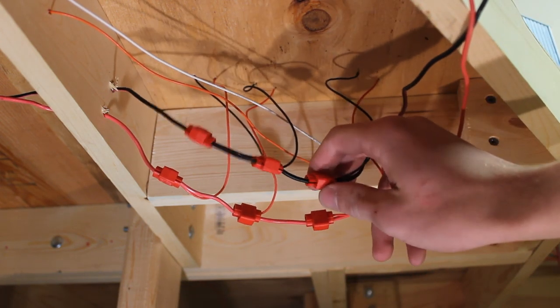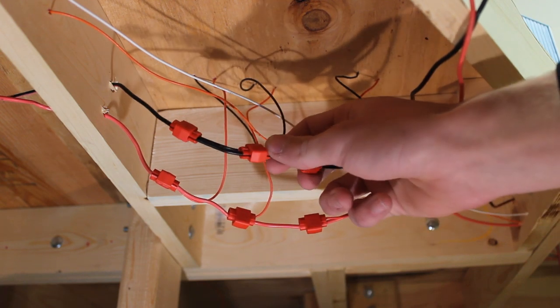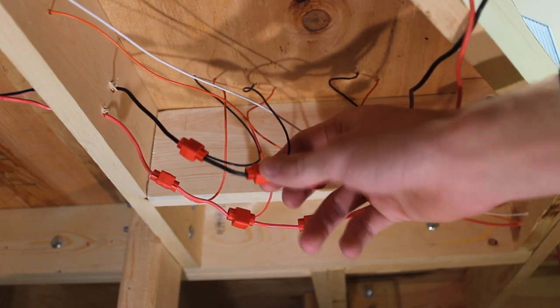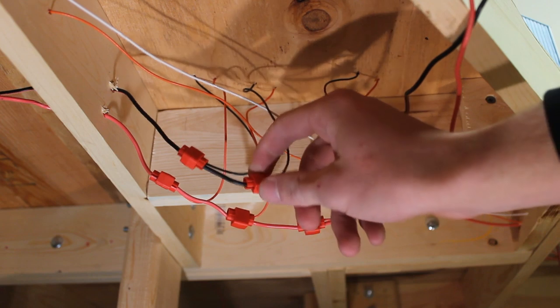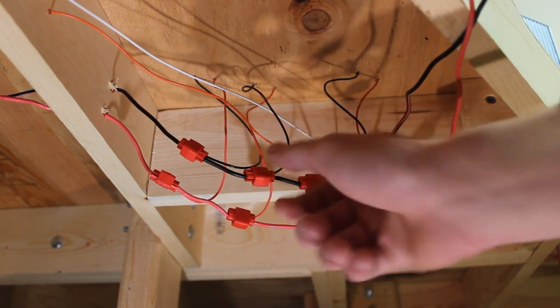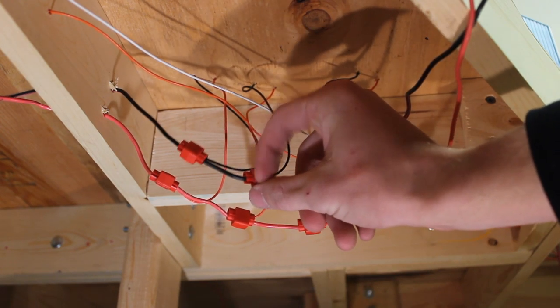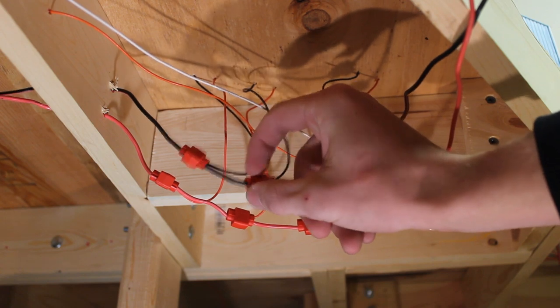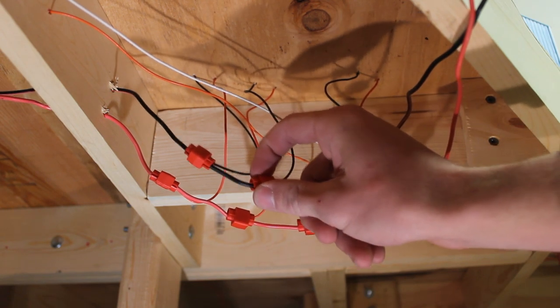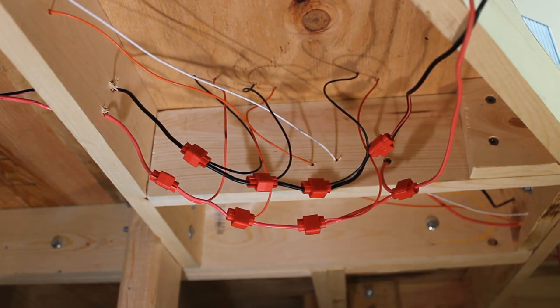And to connect them I'm just using these suitcase connectors here. Make it really easy to use. You just put the wires in and you clamp down a little metal bar and it will make contact with both wires. And you just close it. Makes it really quick and simple.